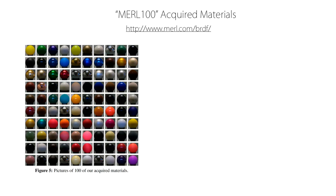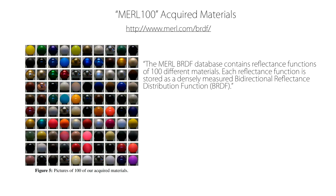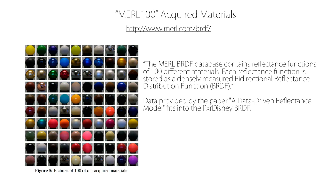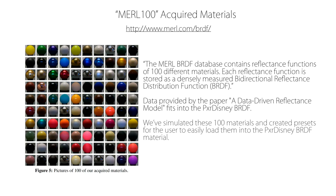On top of that, the Merl 100 are these acquired materials that you can check out at merl.com/BRDF. The Merl BRDF database contains reflectance functions of 100 different materials, and each reflectance function is stored as a densely measured bidirectional reflection function. There's a paper based on that called the Data-Driven Reflectance Model, and that fits into the PXR Disney BRDF.